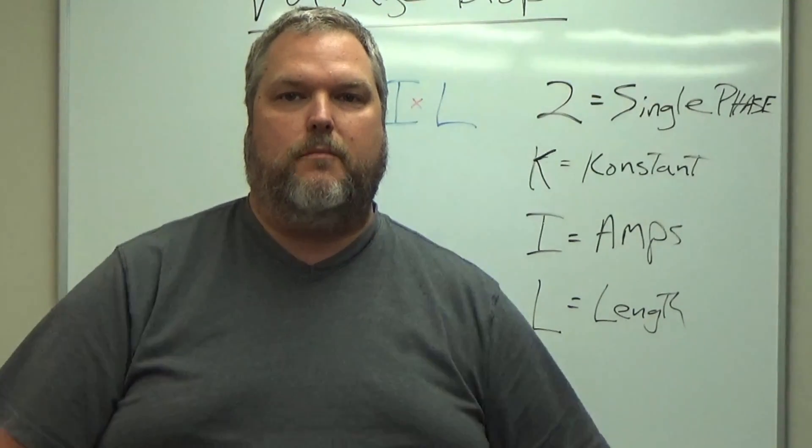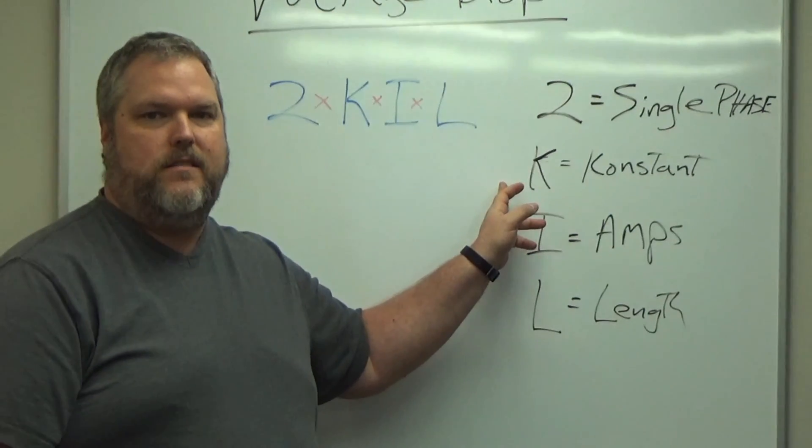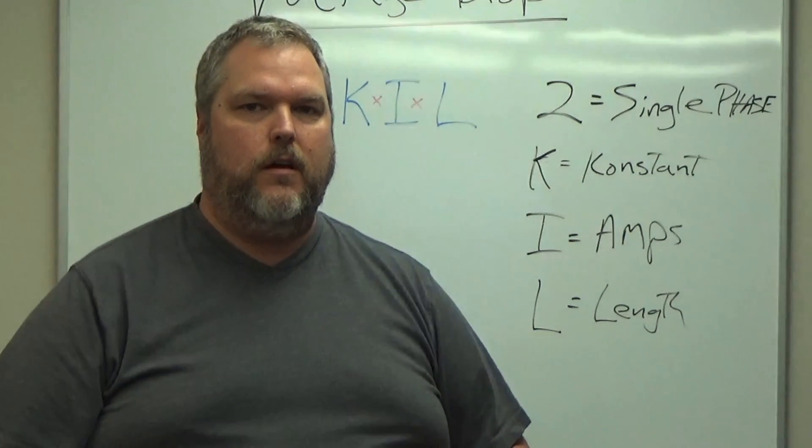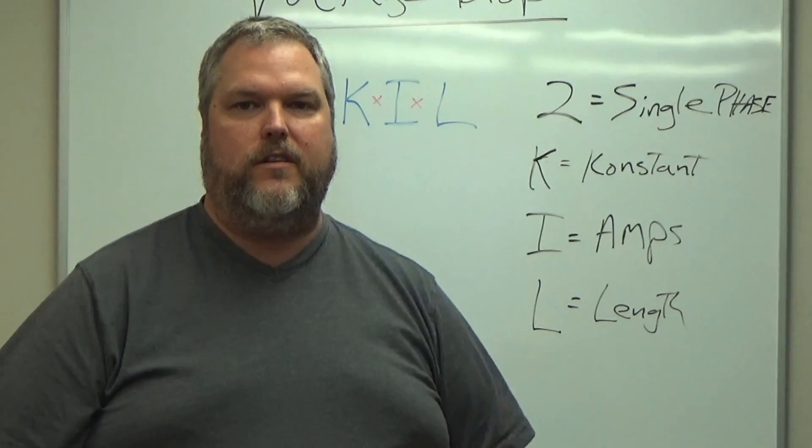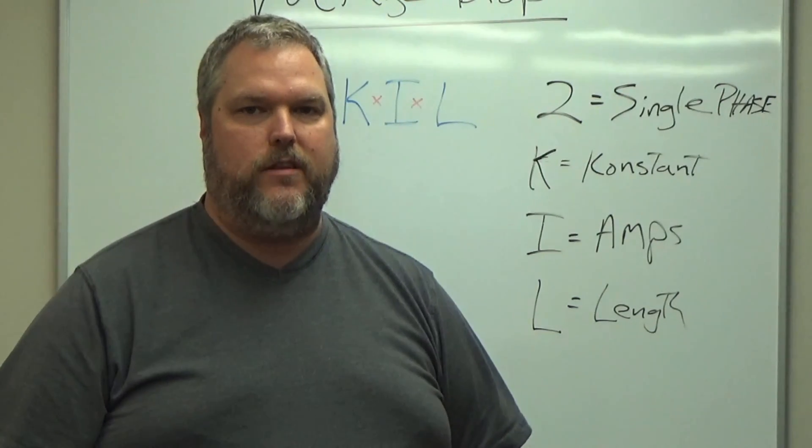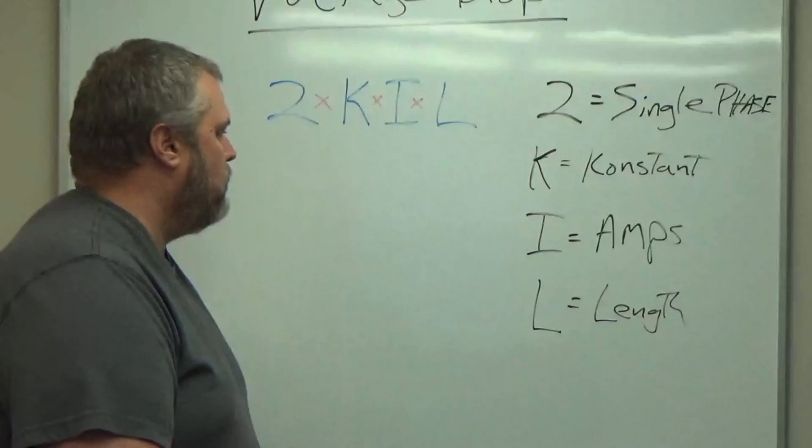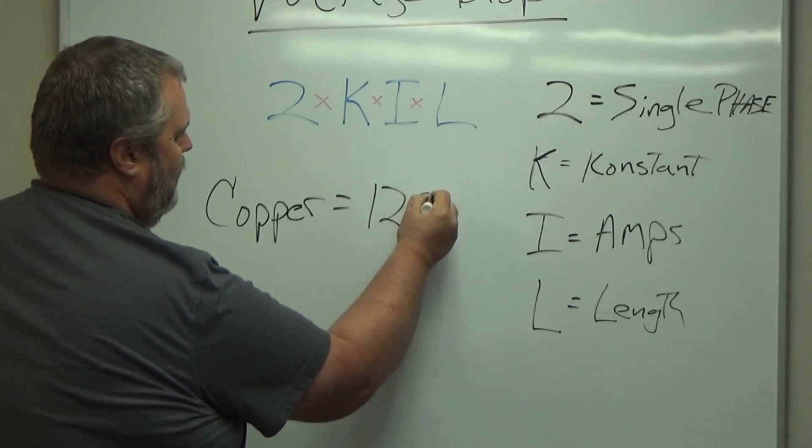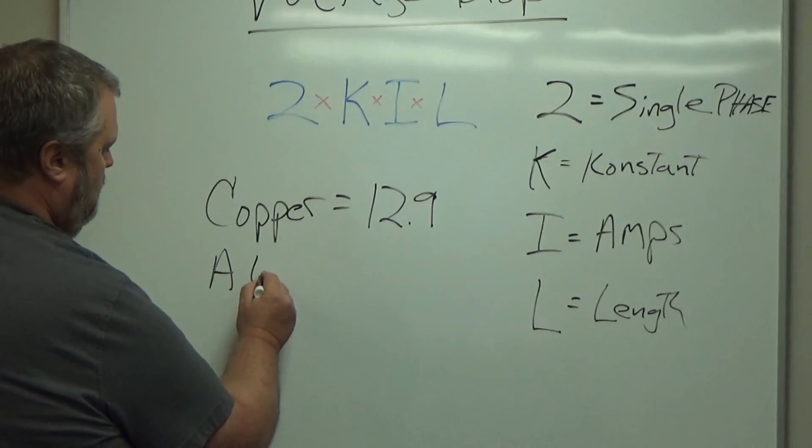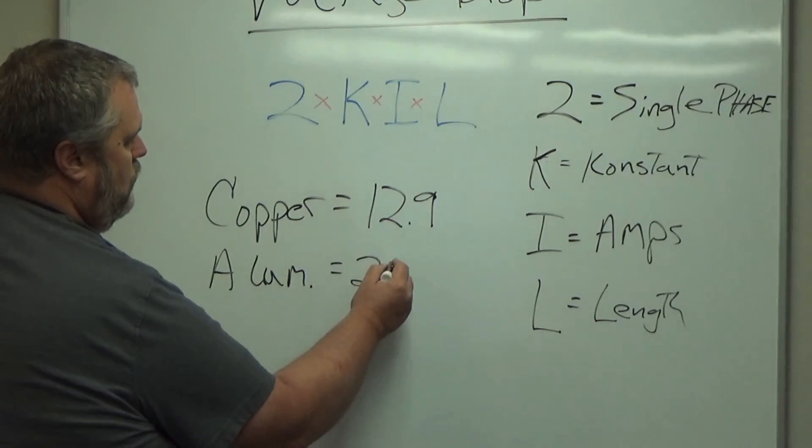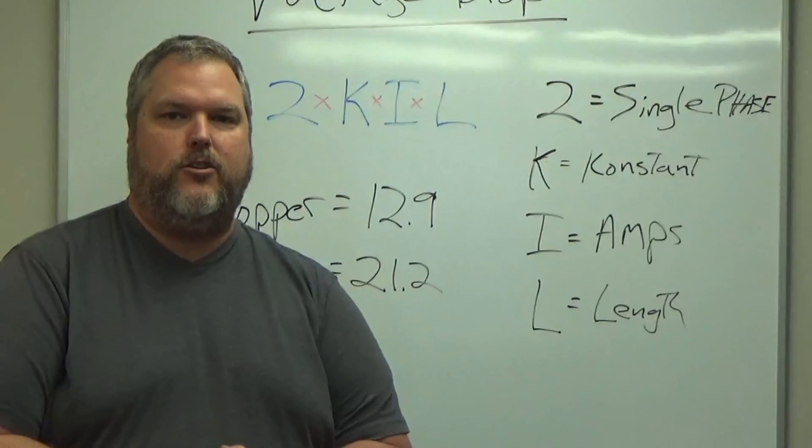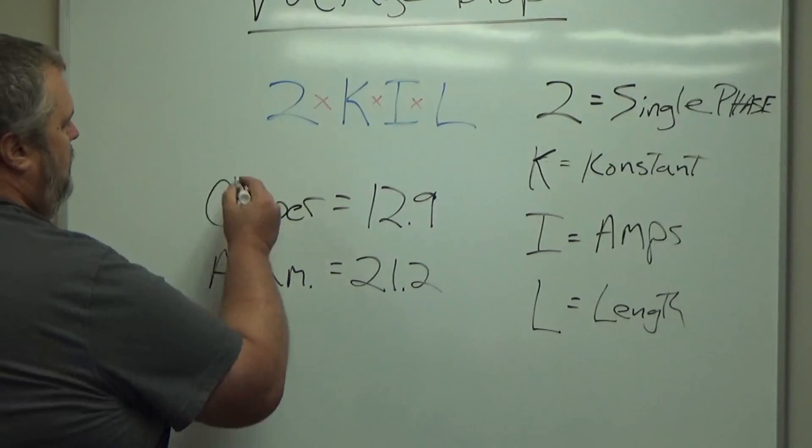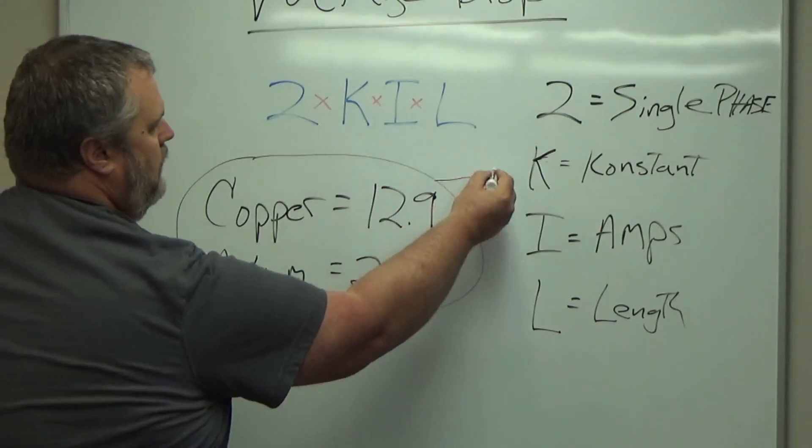The reason I want to start with this is because there's a couple things you need to know. One of the biggest things is the constant. The constant is going to stand for the type of wire we're going to pull. We have to go over aluminum because you can pull aluminum, but we're going to need to know the difference between aluminum and copper. So when we deal with K, copper equals 12.9 and aluminum equals 21.2. A lot of information, but what we need to remember is this is equal to K, the constant.